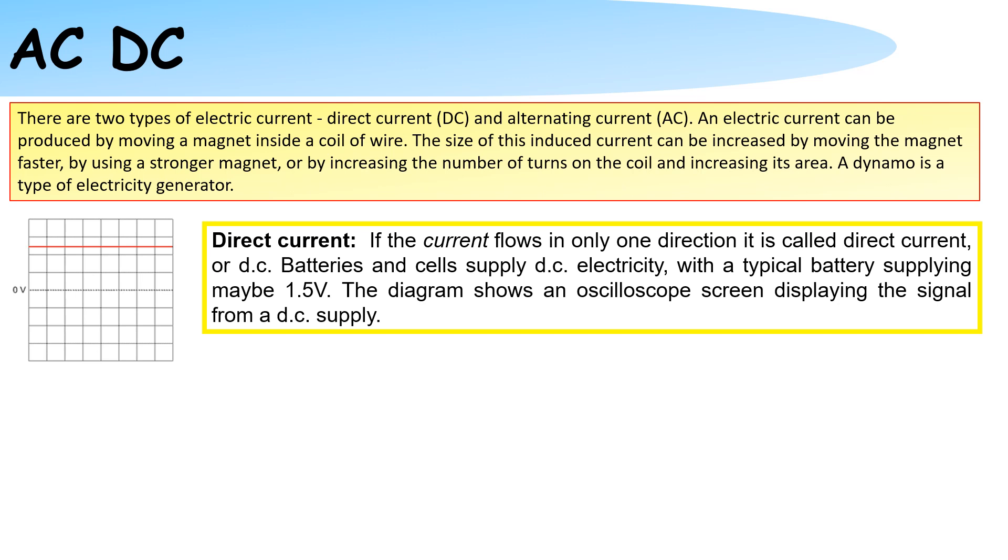The diagram of the oscilloscope screen shows that the current is only flowing in a single direction as it only goes along one side, so the positive side in this case, of the graph.